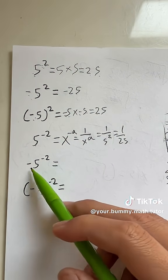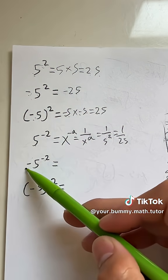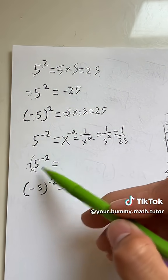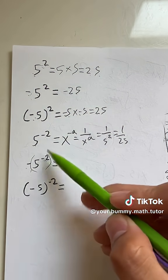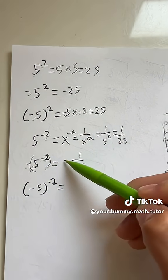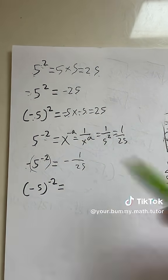Now, what if it's negative 5 to the negative second? As established before, when the negative is not inside parentheses, we have to do this first. 5 to the negative second, we just figured out, is 1 over 25, and we put in negative 1 over 25. And lastly,